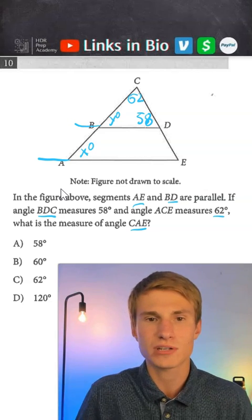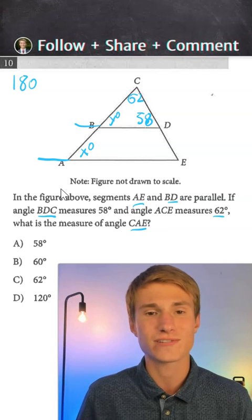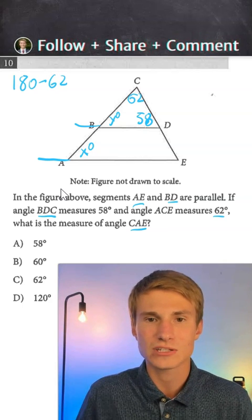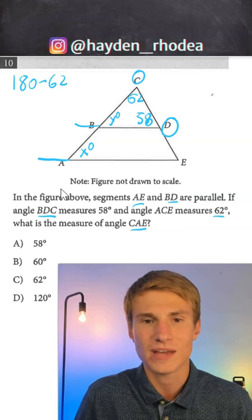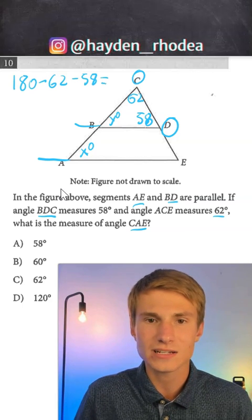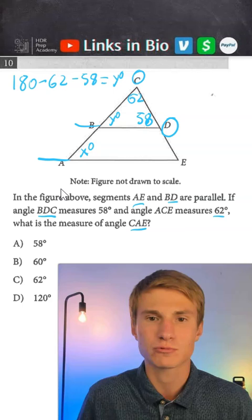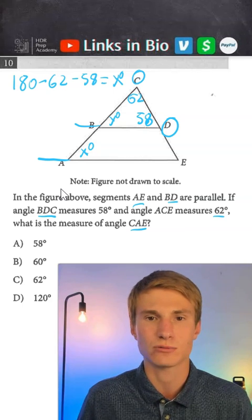Now, once we understand that, we can see that we can just do 180 degrees because there's 180 degrees in a triangle minus those 62 degrees from angle C, and then minus 58 degrees from that angle D, and that's going to give us our angle Y, which we know is equal to angle X.